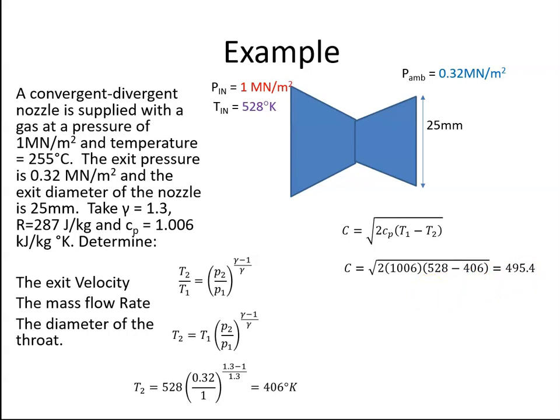The mass flow then is equal to rho AC, and I have the C. I have the radius of this nozzle, and we will assume it's a circular cross section, so I'll be able to calculate the area of that. What I need to get is the density.